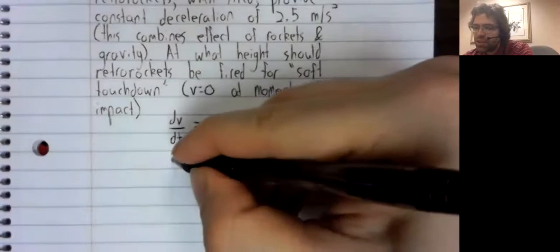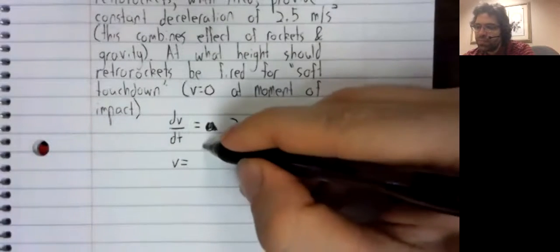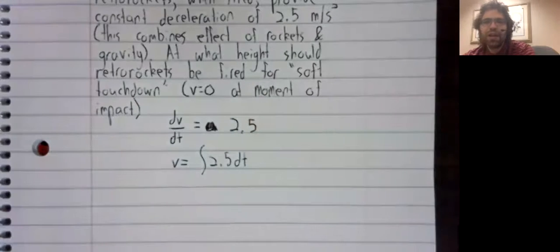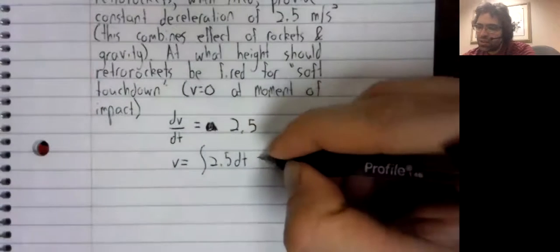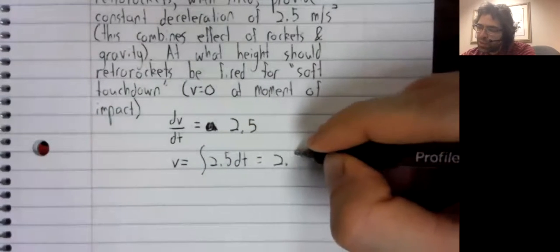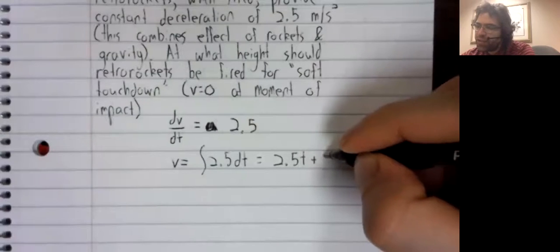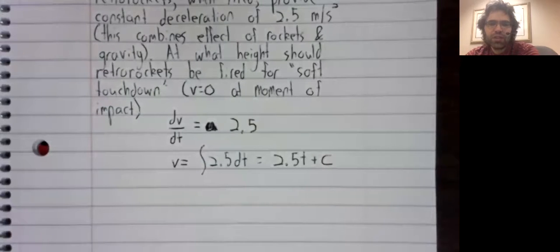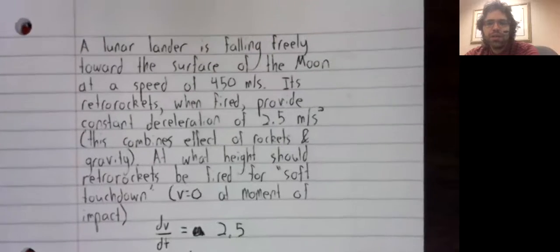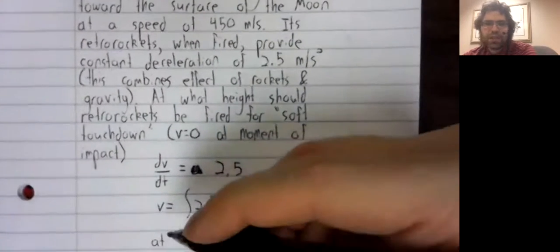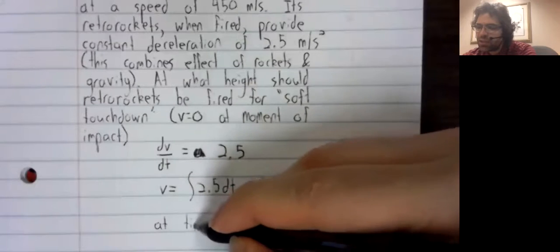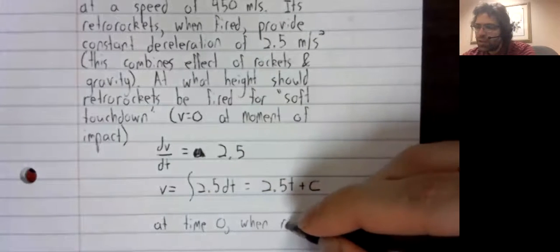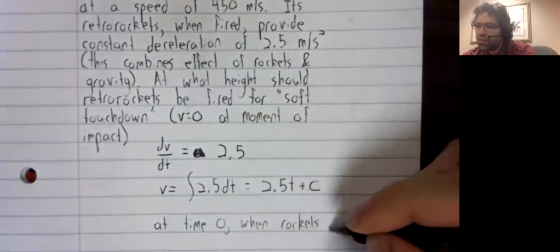So what is the velocity function? We can find it using integration. Or rather, we can find an infinite class of velocity functions using integration. At time zero when the rockets fired.